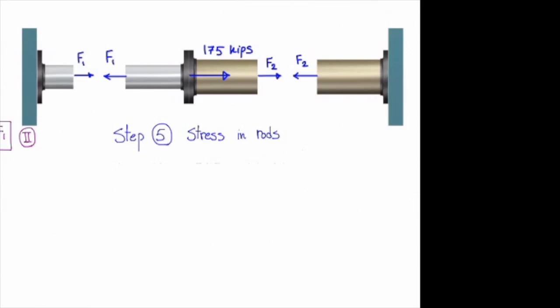All right. Let's determine the stress. Stress is simply force over area. And that gives me 12.32 ksi in element number one. And in element number two would be negative 21.57 ksi.